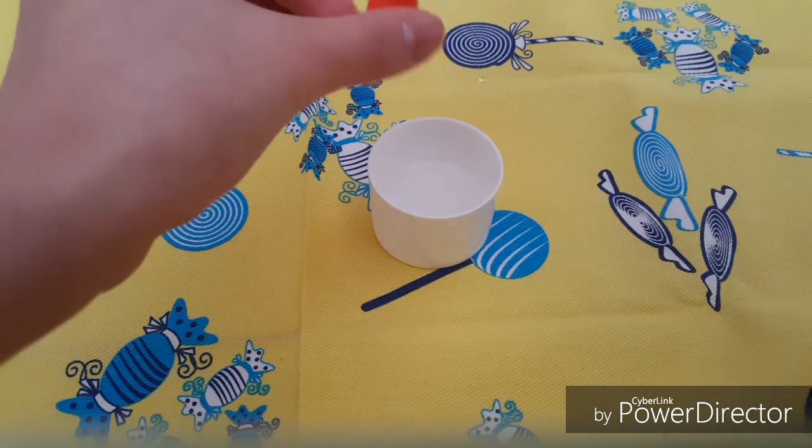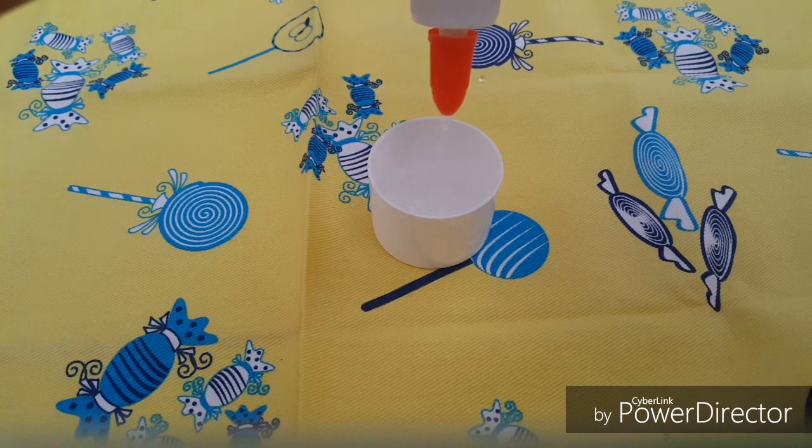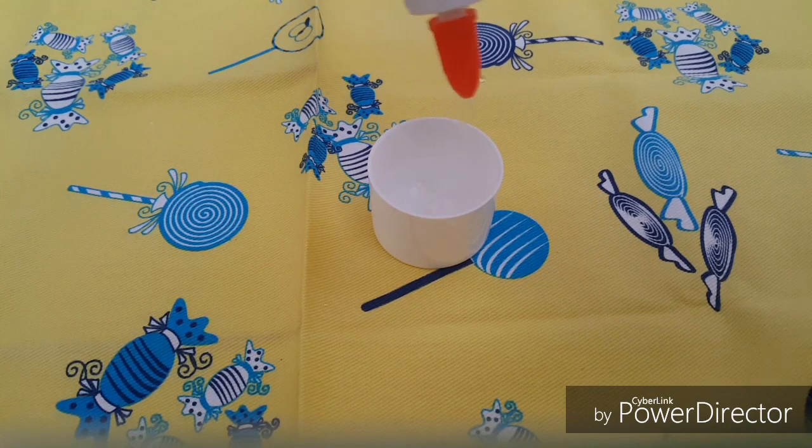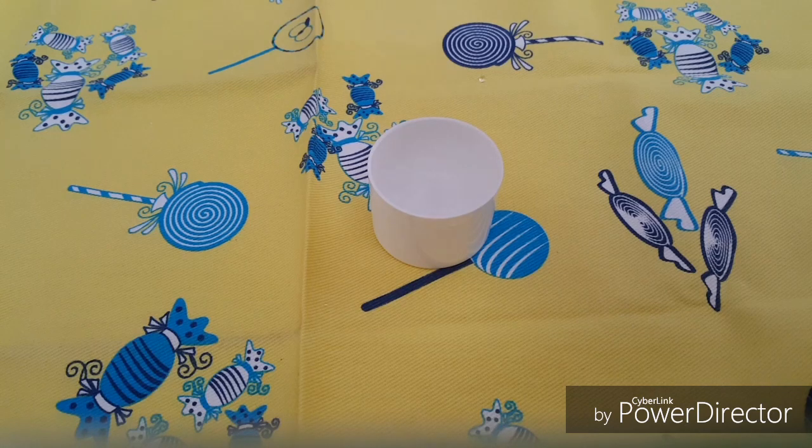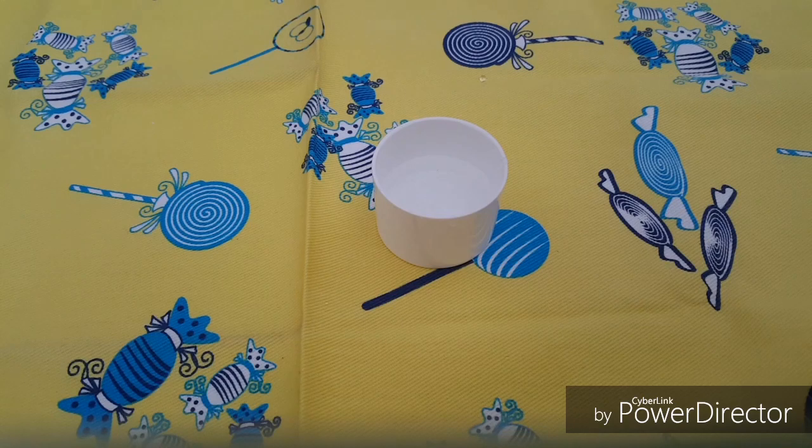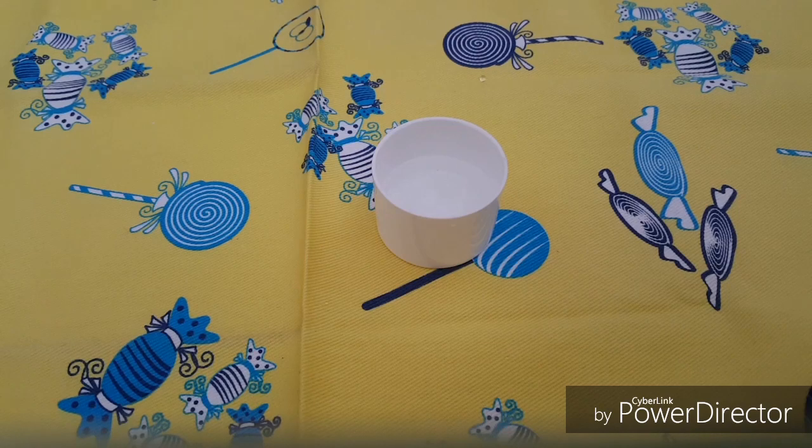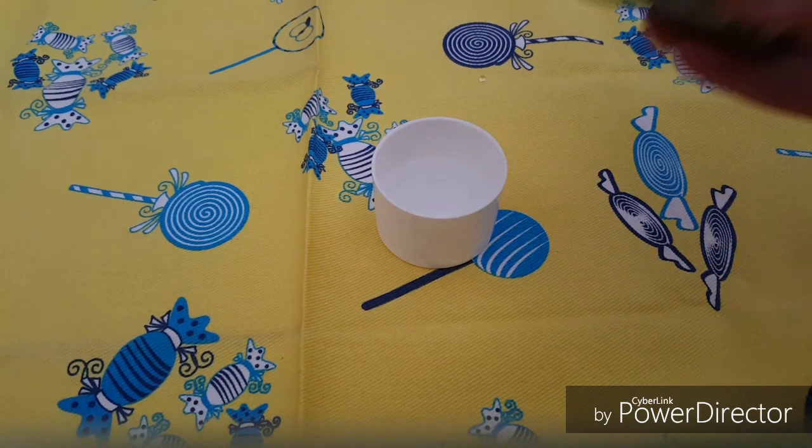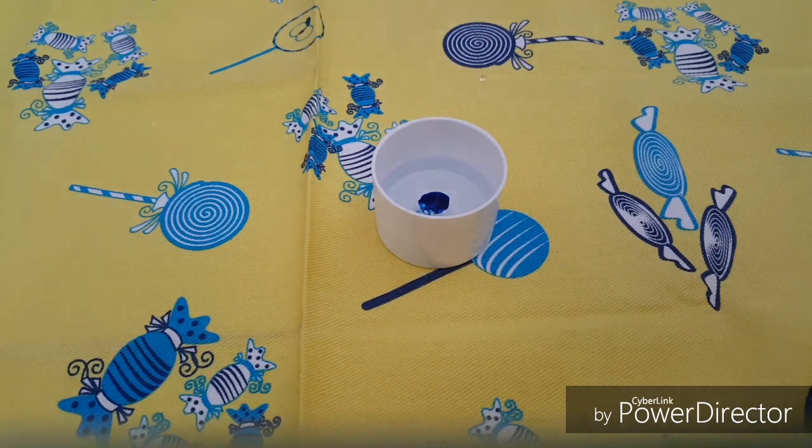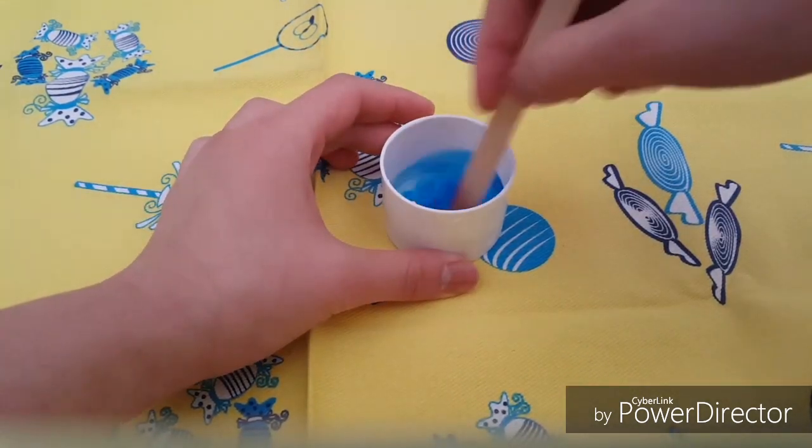Then you're going to add in clear glue so you make the glitters and the add-ins flow slower. Then you're going to add in your food coloring, so you can add two to three drops and mix it in.